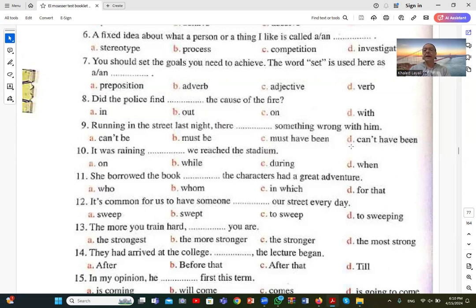Number eleven: She borrowed the book blank the characters had a great adventure. In which. In which the characters had a great adventure. If I use a preposition, I bring which after it. But if I don't use a preposition, I use where, which is a relative pronoun that indicates place. You can say Cairo is the city where I was born, or in which I was born.